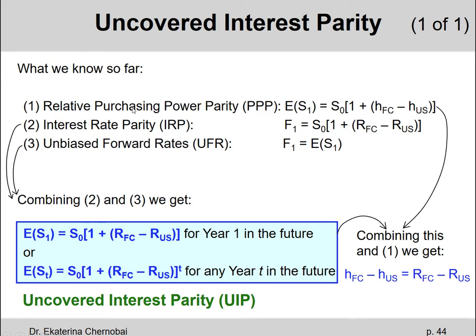In the relative purchasing power parity formula, which is formula number one, in the brackets we have one plus H — the inflation rate in the foreign country minus the inflation rate in the US. In the uncovered interest rate parity, in the brackets we instead have one plus the difference between the foreign and the domestic risk-free rates. So the difference in the inflation rates equals the difference in the risk-free rates: H_FC minus H_US equals R_FC minus R_US.